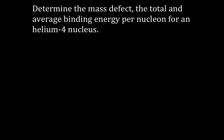So, determine the mass defect, the total, and the average binding energy per nucleon for the helium-4 nucleus. In order to do that, we're going to find, as I said, the mass of the four things before — two protons and two neutrons — and the mass of the helium nucleus.